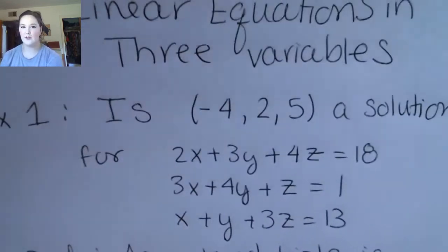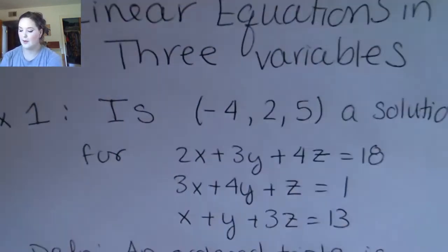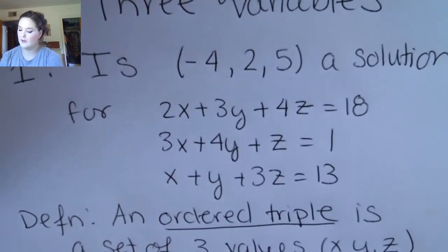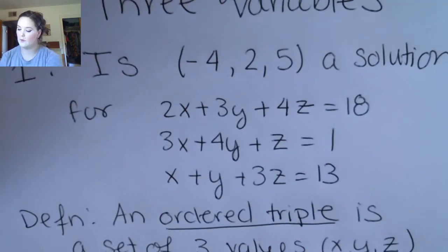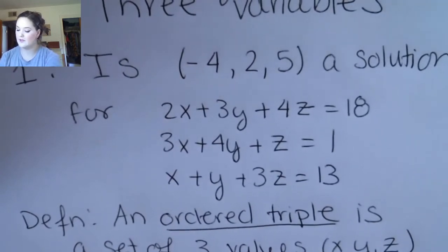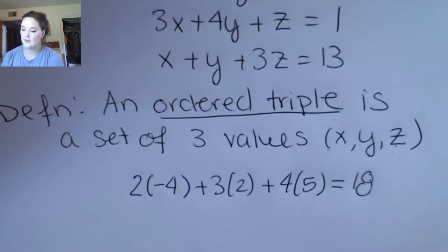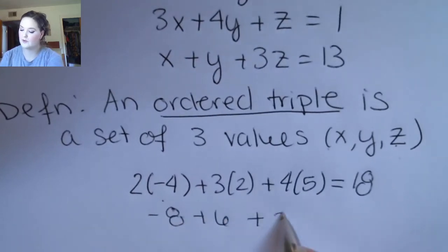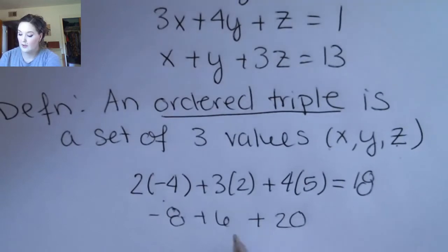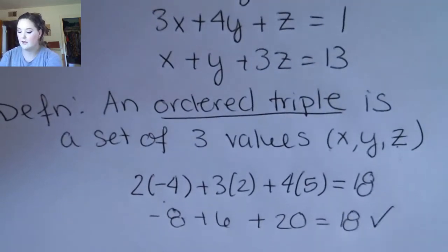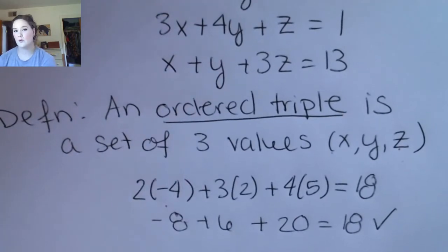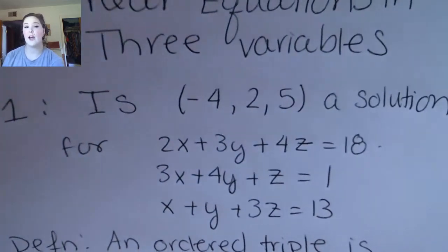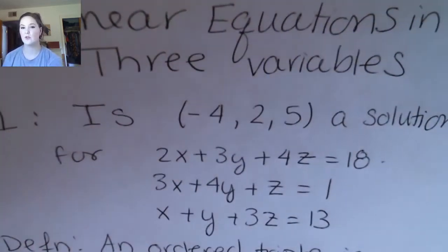After that brief vocab break, we're going to check this solution by plugging it in. So we would have 2 times negative 4, plus 3 times 2, plus 4 times 5. We want to see if this is 18. This is going to be negative 8 plus 6 plus 20. Is this 18? Yes. So this ordered triple is certainly a solution for the first equation, but we have to check it for all of the equations to make sure it's a solution for the system.